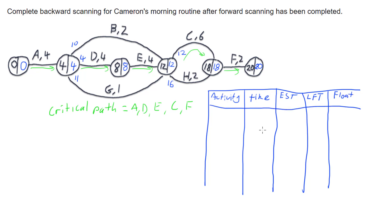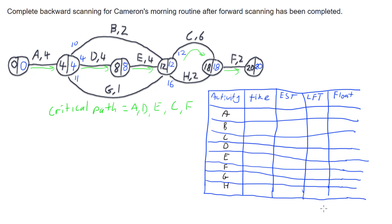Each row in the table represents an activity in the network. So I have activities A, B, C, D, E, F, G, and H. Putting in the activity times: A took 4 minutes, B took 2, C took 6, D took 4, E takes 4, F takes 2, G takes 1, and H takes 2. Now I can go through and put in the earliest start times — the values that already came from forward scanning.